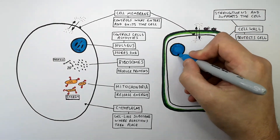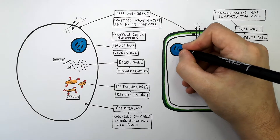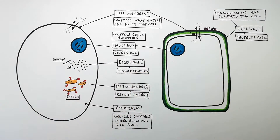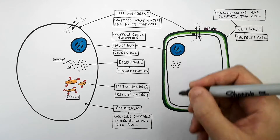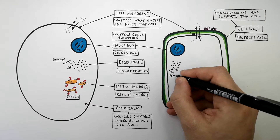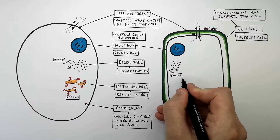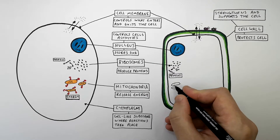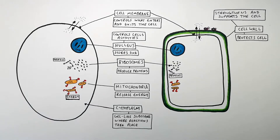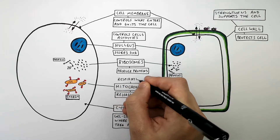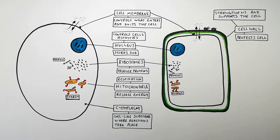This is the nucleus of the plant cell. It stores DNA and it controls the activities of the cell. Plant cells also have ribosomes, and these ribosomes are producing proteins — ribosomes are the site of protein synthesis, meaning they produce proteins. Plant cells also have mitochondria, which release energy during respiration. Plant cells also have a cytoplasm, the gel-like substance where reactions take place.